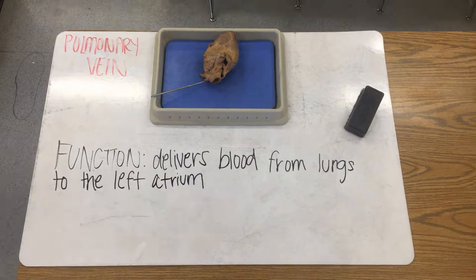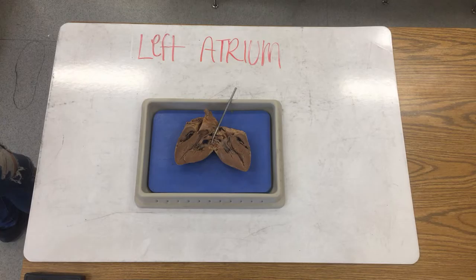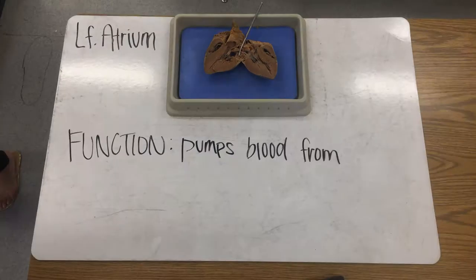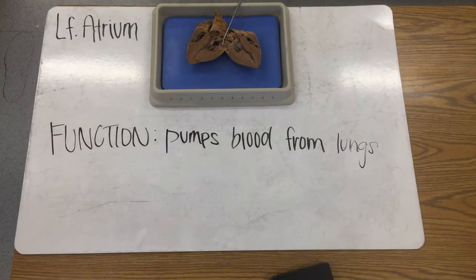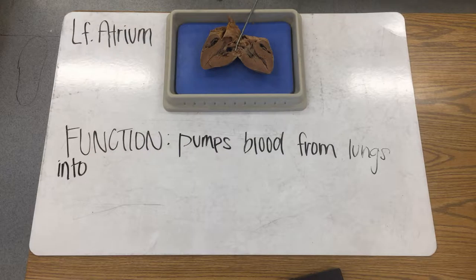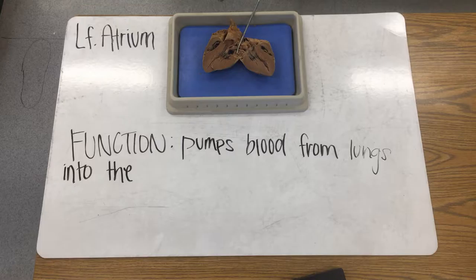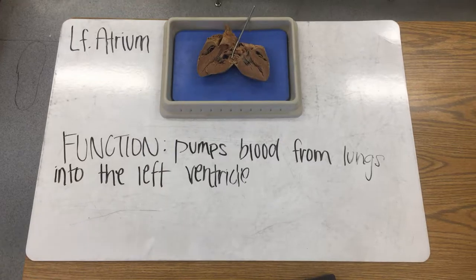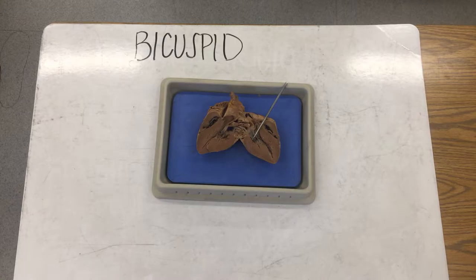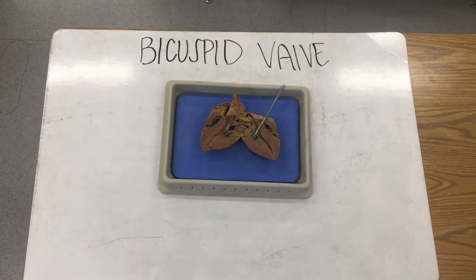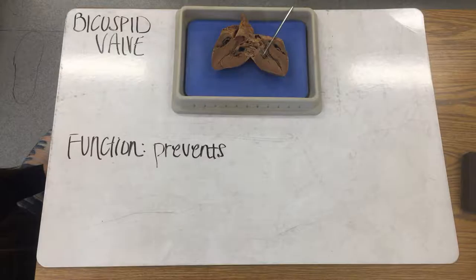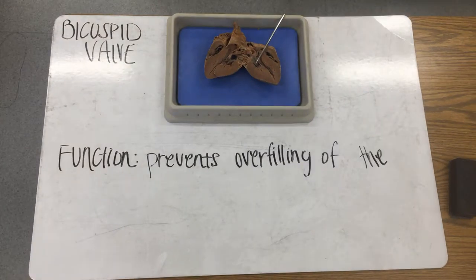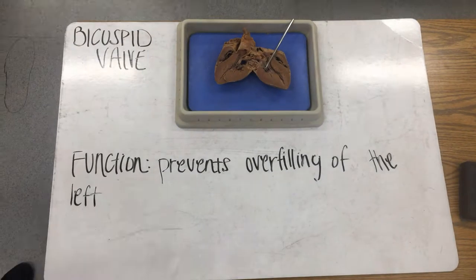The left atrium then takes the blood from the lungs and pumps it into the left ventricle. But before the blood can reach the left ventricle, it needs to go through the bicuspid valve, which prevents the overfilling of the left ventricle.